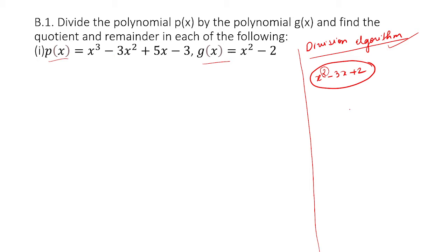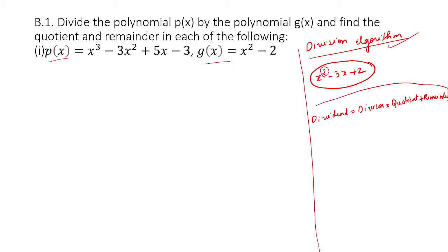Because of that, we'll be using the division algorithm. The division algorithm states that the dividend is equal to the divisor into quotient plus remainder. This is the division algorithm: dividend equals divisor times quotient plus remainder.